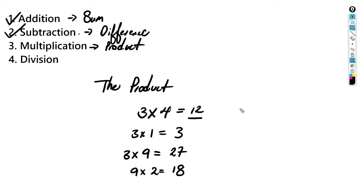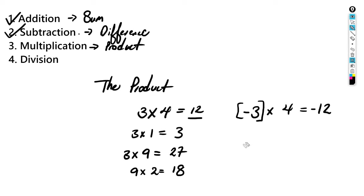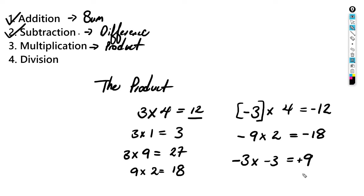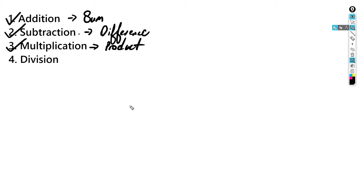Let's multiply some negative numbers. Negative three multiplied by four gives us negative twelve. Negative nine multiplied by two gives us negative eighteen. Now let's multiply two negative numbers: negative three by negative three. When you multiply two negative numbers you get a positive number, so this is positive nine. Anytime you multiply two negative numbers — like negative one times negative ten — you get a positive number, which is positive ten.